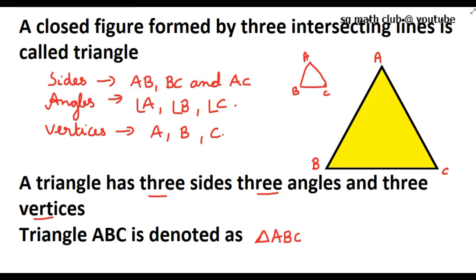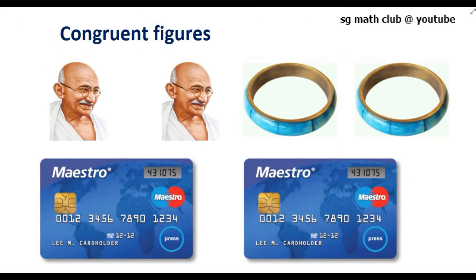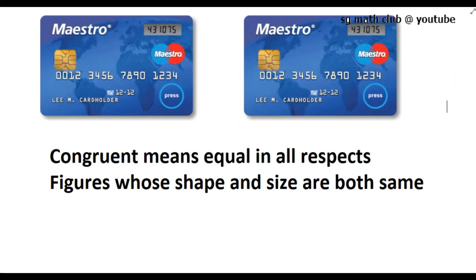Now in this video we are going to study about congruence of triangles. What is the meaning of congruence? You can see two photos of Mahatma Gandhaji. Again you can see two bangles which are of the same shape, same size, and same color — two identical bangles. Again you can see two ATM cards issued by the same bank — two identical ATM cards. Indeed, they are called congruent figures.